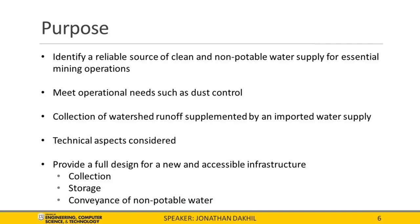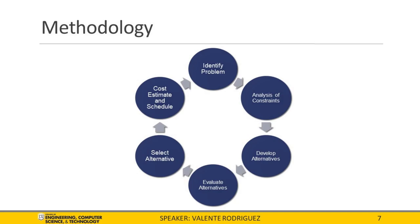We used the engineering design process to develop our solution. We begin by identifying the problem, followed by an analysis of possible constraints. This process allows for the development of alternatives to be evaluated. Since this project is made up of different groups, we use a Gantt chart to stay on schedule. Finally, we choose one of the alternatives, design it, and conclude by providing a cost estimate. However, if there are any concerns from our client, the process may repeat itself.